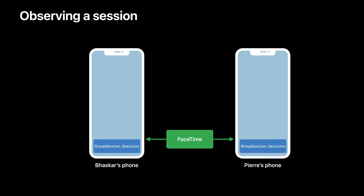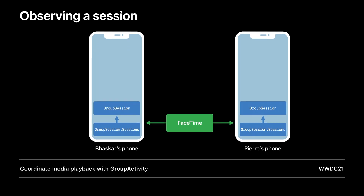Next, let's talk about observing sessions. Here we have the same app that we were looking at earlier. The application at this point has called Activate on the activity object. Your application then needs to iterate over incoming sessions via an async sequence on the Group Session class. When there is a session, the application gets handed the Group Session object for the shared experience. Please note that this is the same step your application would take, whether it was the initiating app or on the remote device receiving the session. To go into more details about initiating and observing group sessions, I would recommend you watch this WWDC session.